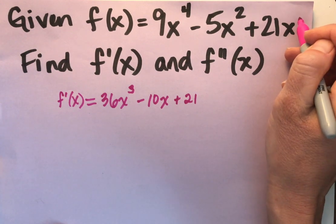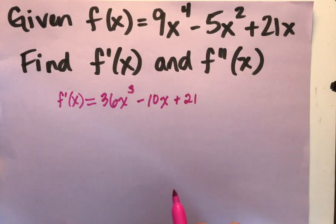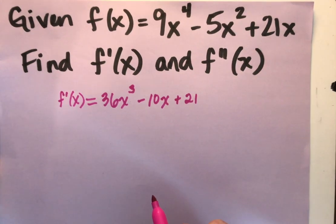So that x to the zero power just gives me a 1. So the 21x is going to become just a 21.